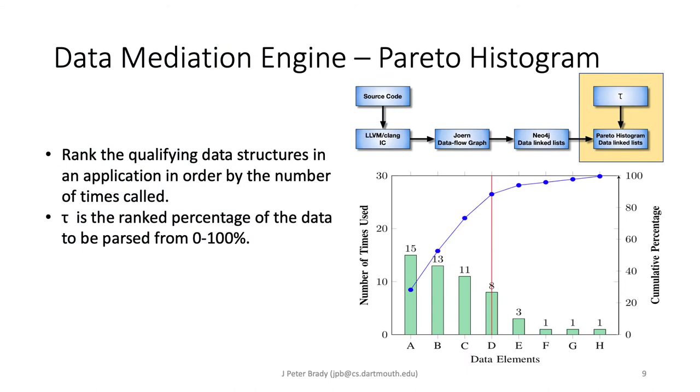We can now take the counts of our input variables and write the data in the application order by the number of times called. So in our little sample here we have data elements labeled A through H. You can see at D the curve of the cumulative percentage of these data structures the number of times they were used has a knee in it. So the four data elements to the left here could be considered the vital few of the Pareto histogram.